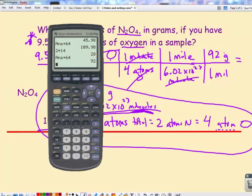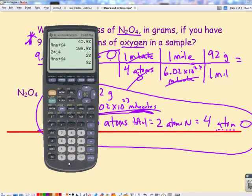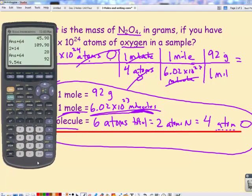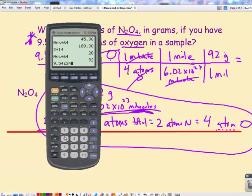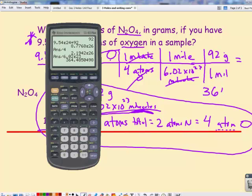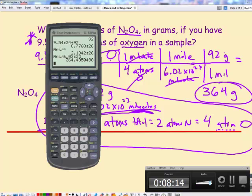All right. So from there I just have to plug and chug. Just put them in my calculator: 9.54 times 10 to the 24th times 92 divided by 4 divided by Avogadro's number. So the correct answer is there are 364 grams when you have that many atoms of oxygen. You can go now.